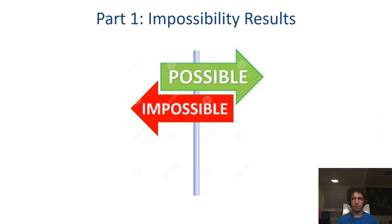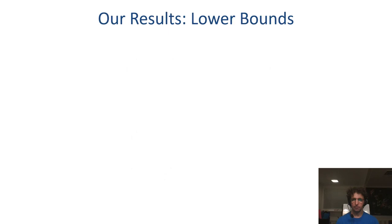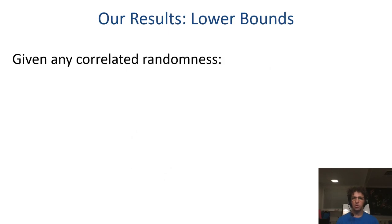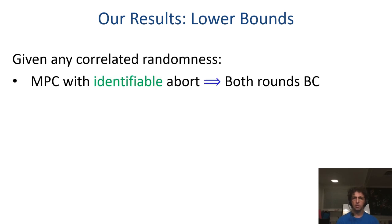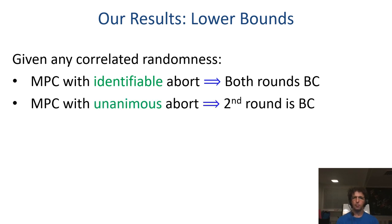In the remaining part of the talk, we will give a high-level overview of the positive and negative results, starting with the impossibility results. To recall the lower bounds: given any correlated randomness, if a protocol achieves identifiable abort in two rounds, then both rounds must be communicated over a broadcast channel. And if a protocol achieves unanimous abort, then the second round must be communicated over broadcast — it cannot be communicated over point-to-point.